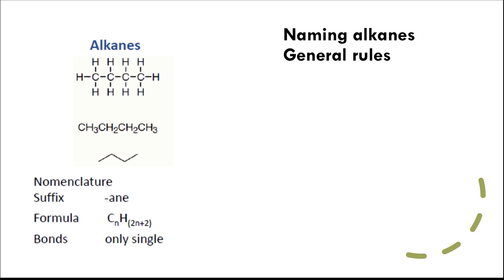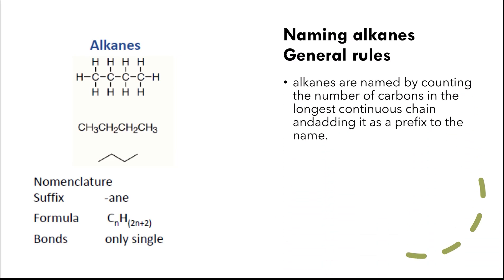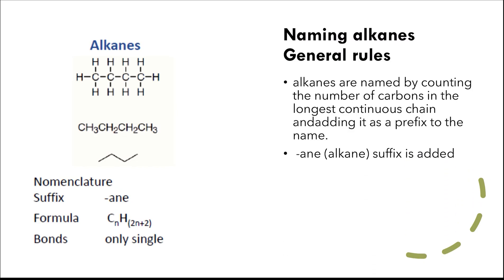How to name alkanes as a general rule: the name consists of a prefix which refers to the number of carbon atoms in the chain — meth, eth, prop, but, and so on — depending on the number of carbon atoms. Then the suffix, which is 'ane', refers to alkane.